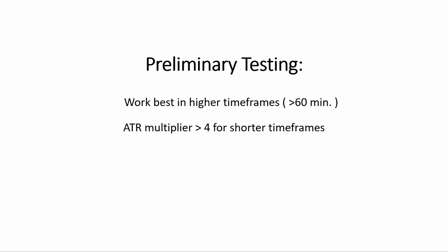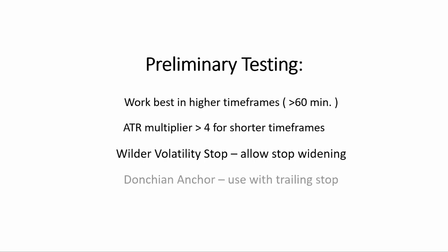For the volatility stop, the widening option is preferable for stop adjustments during periods of increasing volatility. Whereas for the Donchian anchor, as mentioned, it's the other way around — it's determined by the most favorable close in the look-back period and should always be used with the trailing stop option activated.